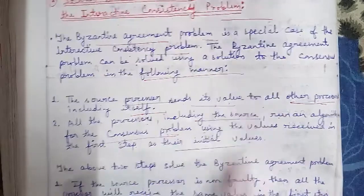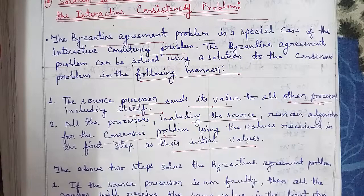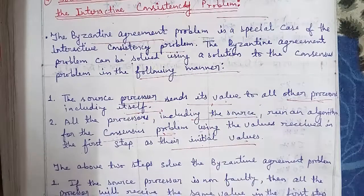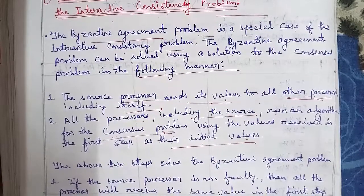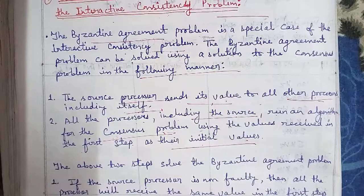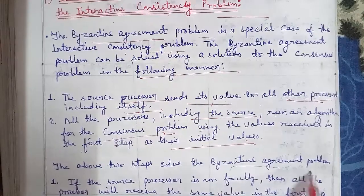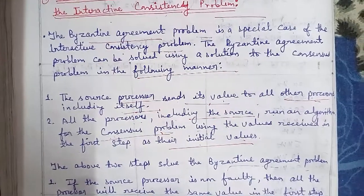The consensus problem is run using the values received in the first step as the initial value. Using all these values, we can then solve the Byzantine agreement problem.